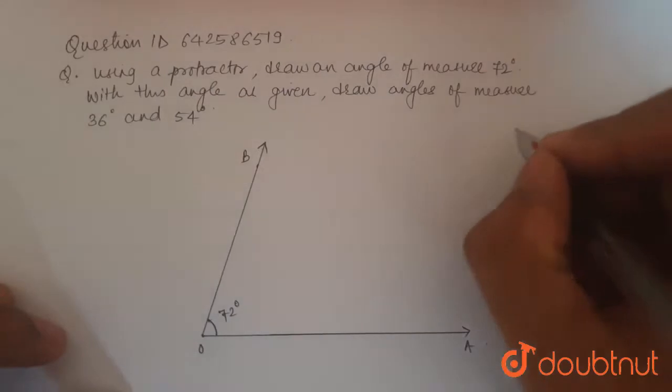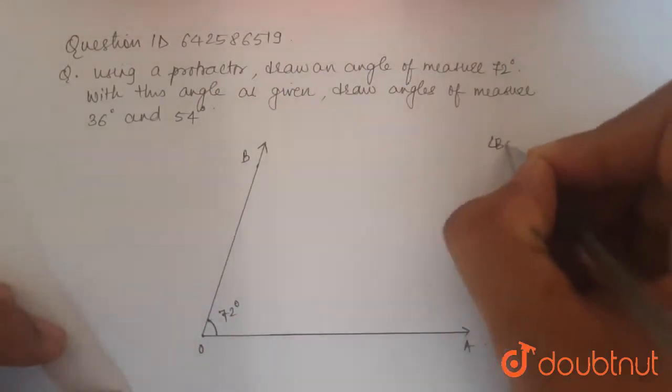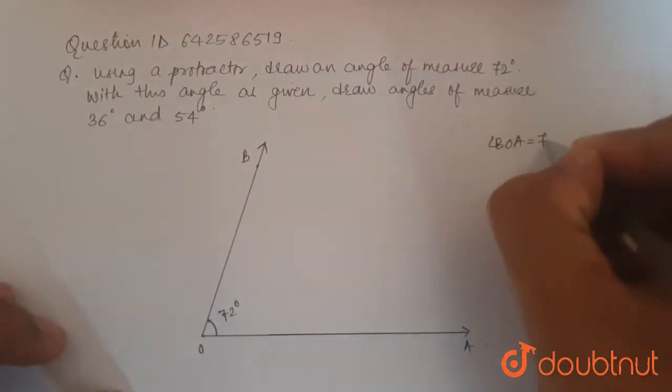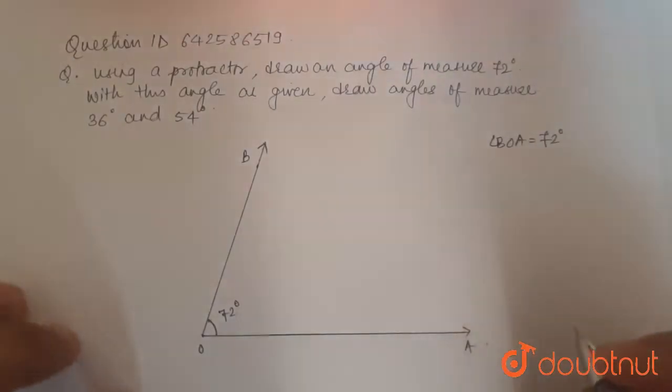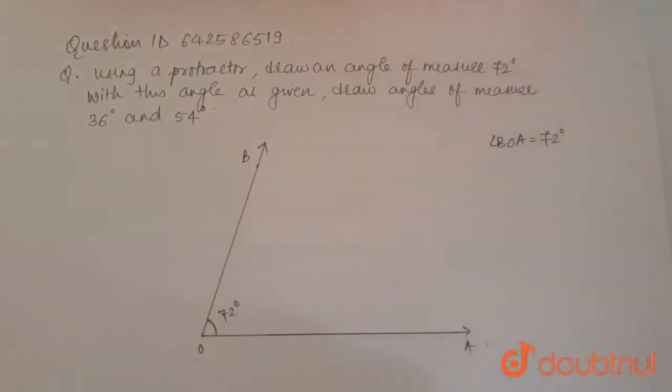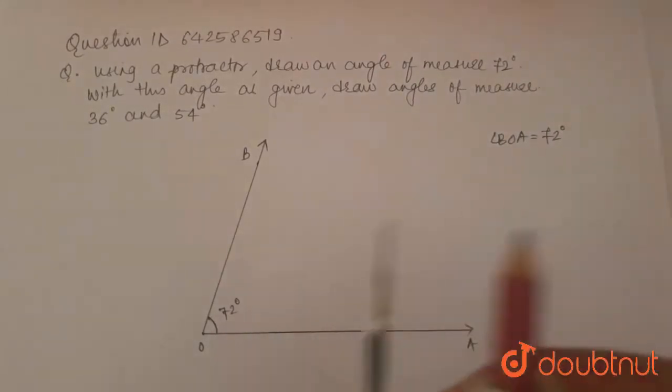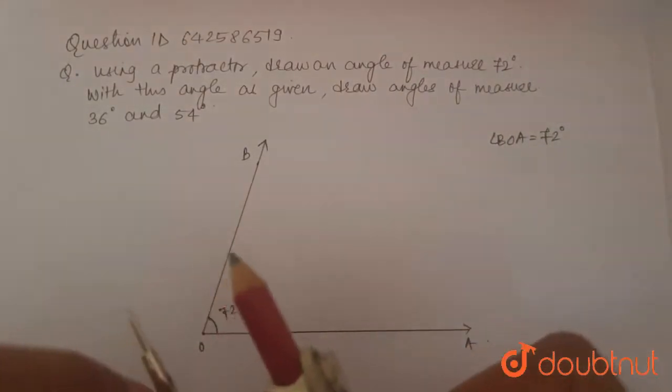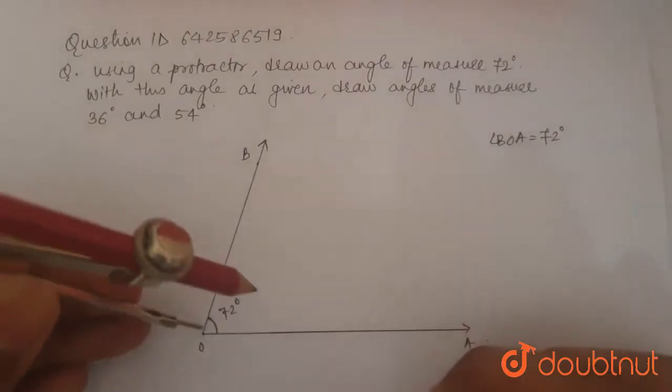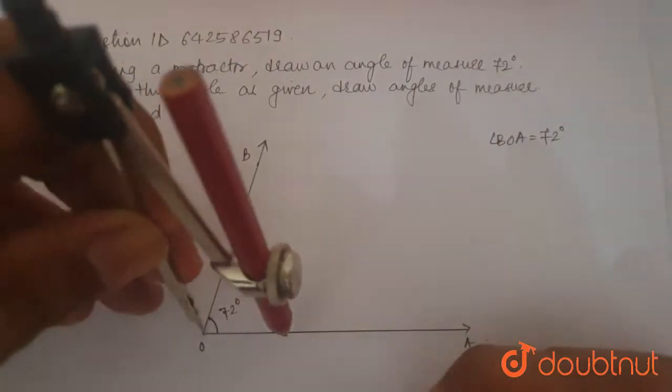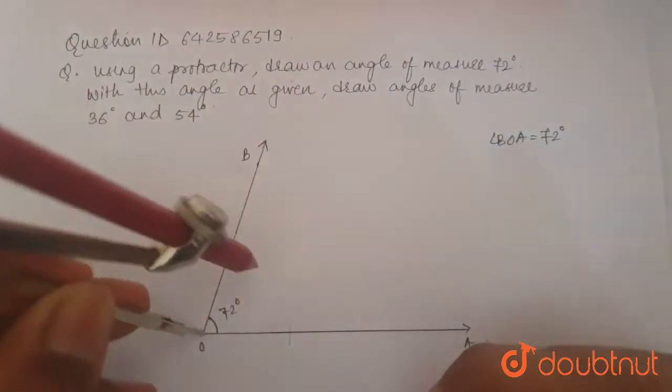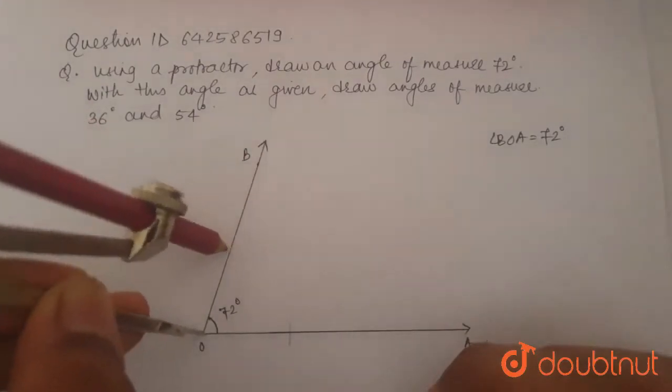We write here angle BOA equal to 72 degrees. The half of this angle will be 36 degrees, which is asked to us in the question. You take a compass of random distance on it and keeping the compass on O, you make two arcs on both the sides of the angle.